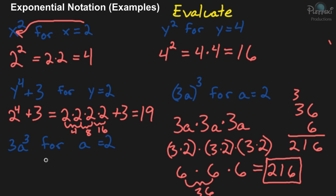Okay. Now the last one here, we have 3a cubed. And now notice there's no parentheses. So this exponent is only going to affect the base that's right next to it, which is the a. So it's going to be 3 times a times a times a. So this exponent 3 only affects the a.